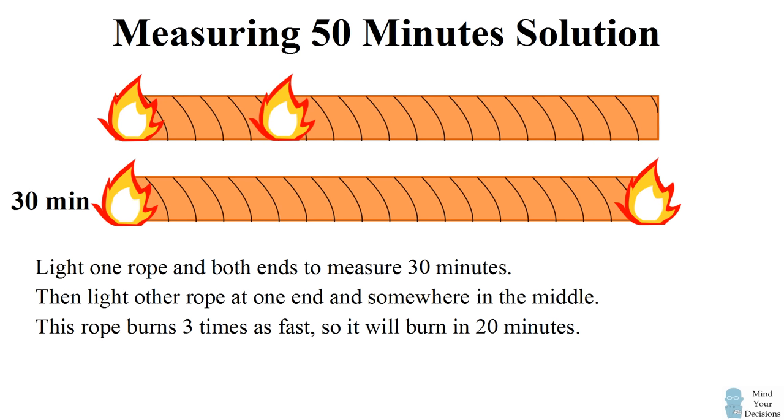Now, two of the flames may end up meeting, and I'm going to show you what to do in that case. You actually just light the rope in another spot. But if you do this correctly, you're going to measure 20 minutes, and then 30 plus 20 is equal to 50. So let's see how this works.